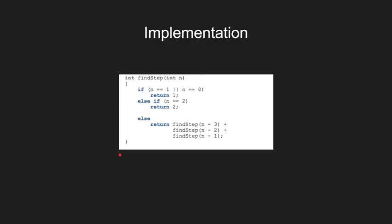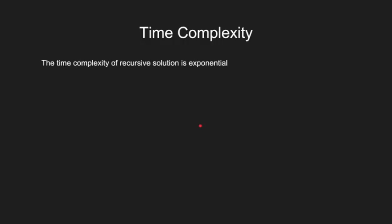Here is the implementation of this problem. For n equal to 0, 1, and 2 are the base cases, and the rest can be found using the simple recursion we already discussed. The time complexity for this problem is exponential since it is a Fibonacci-type tree, which is pretty high.